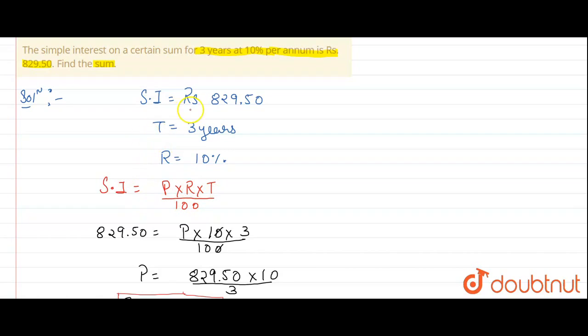So we put in the values. Instead of SI, we put 82,950. Instead of P, we put P because this is what we have to calculate. Multiply by R which is 10. Multiply by T which is 3, upon 100. Then we do the mathematics.